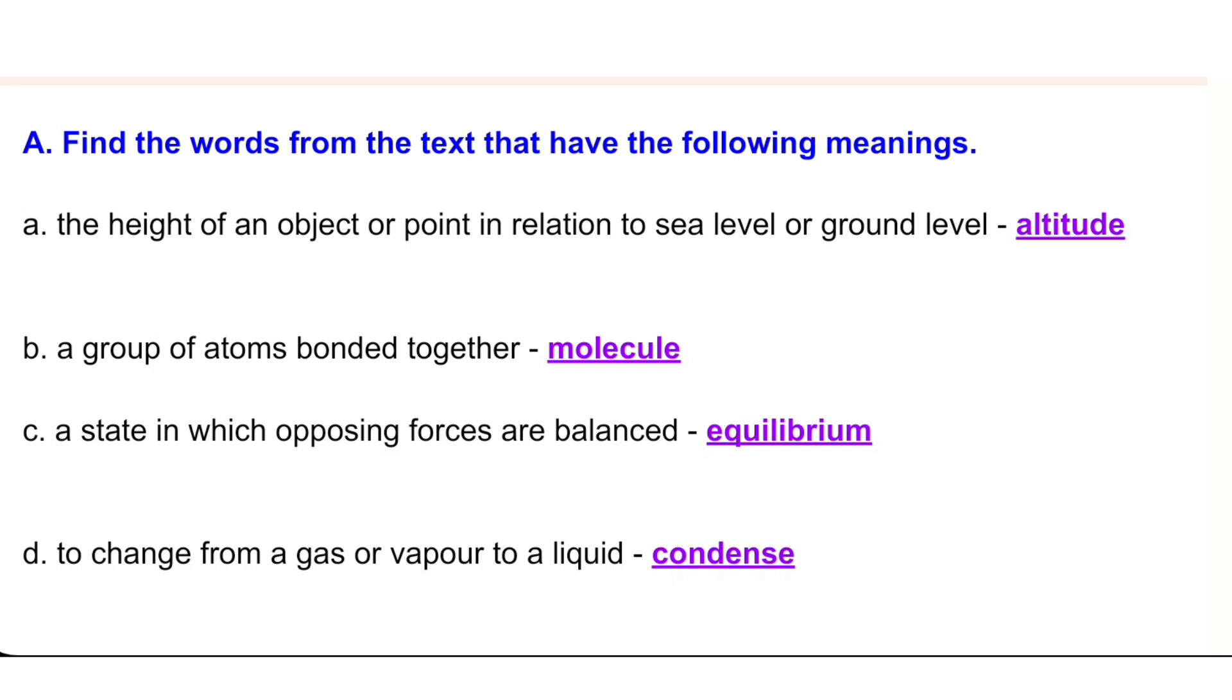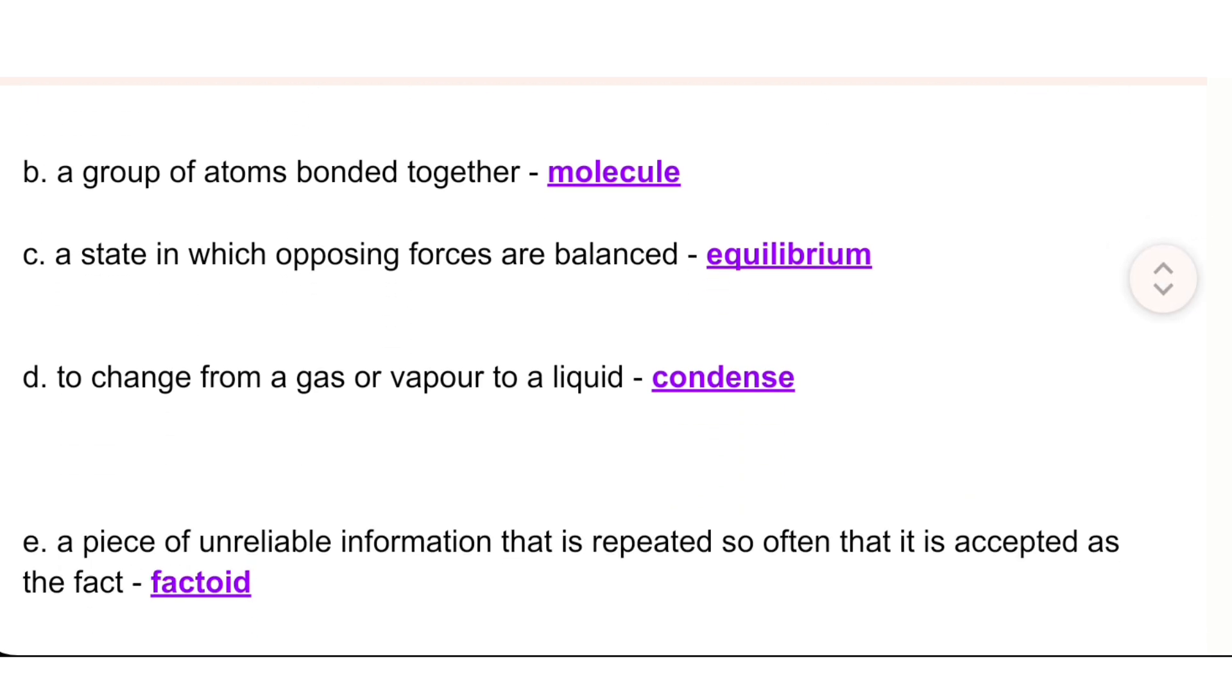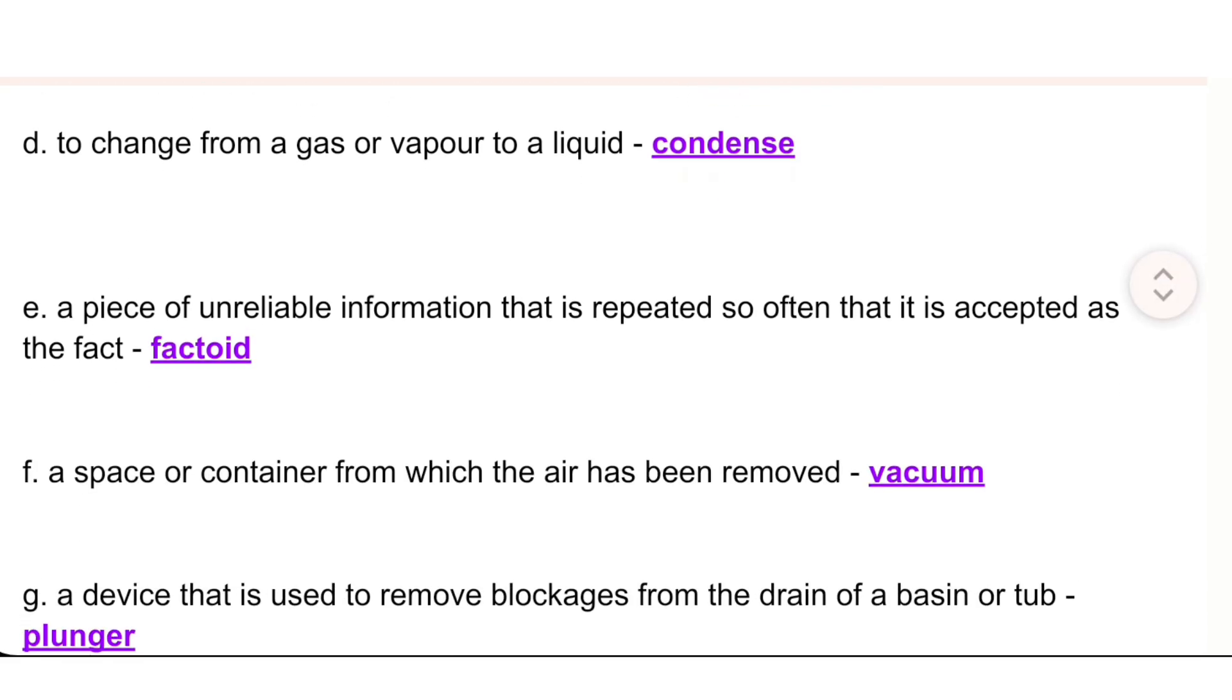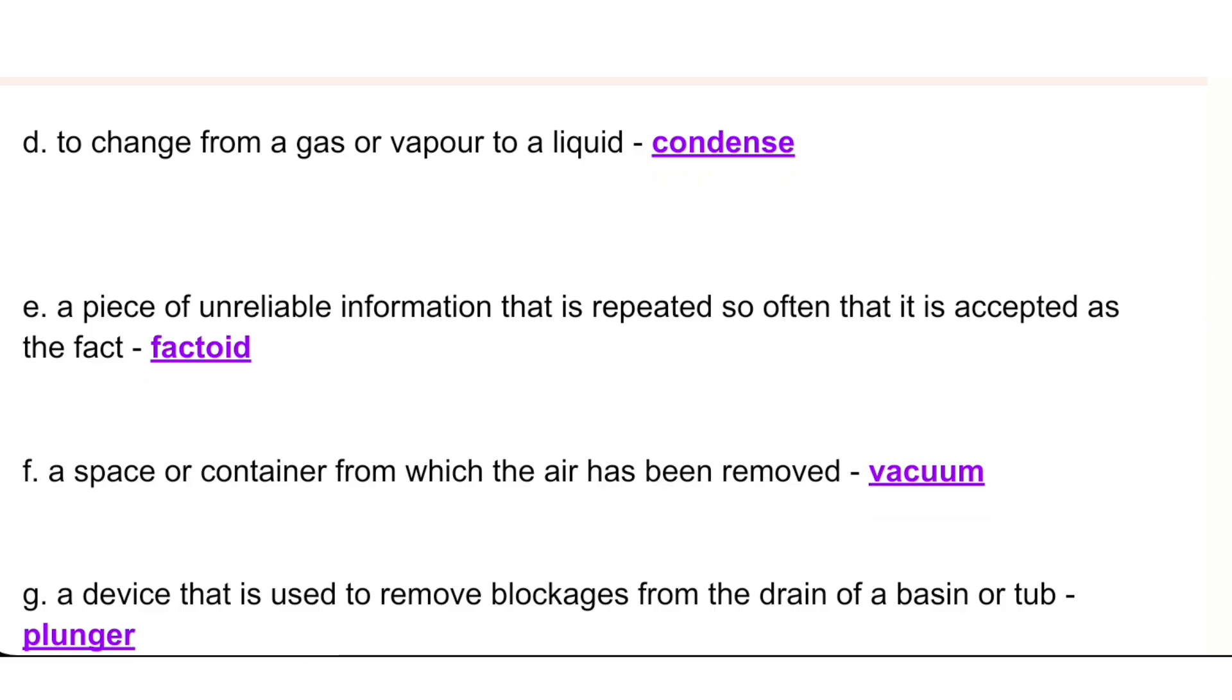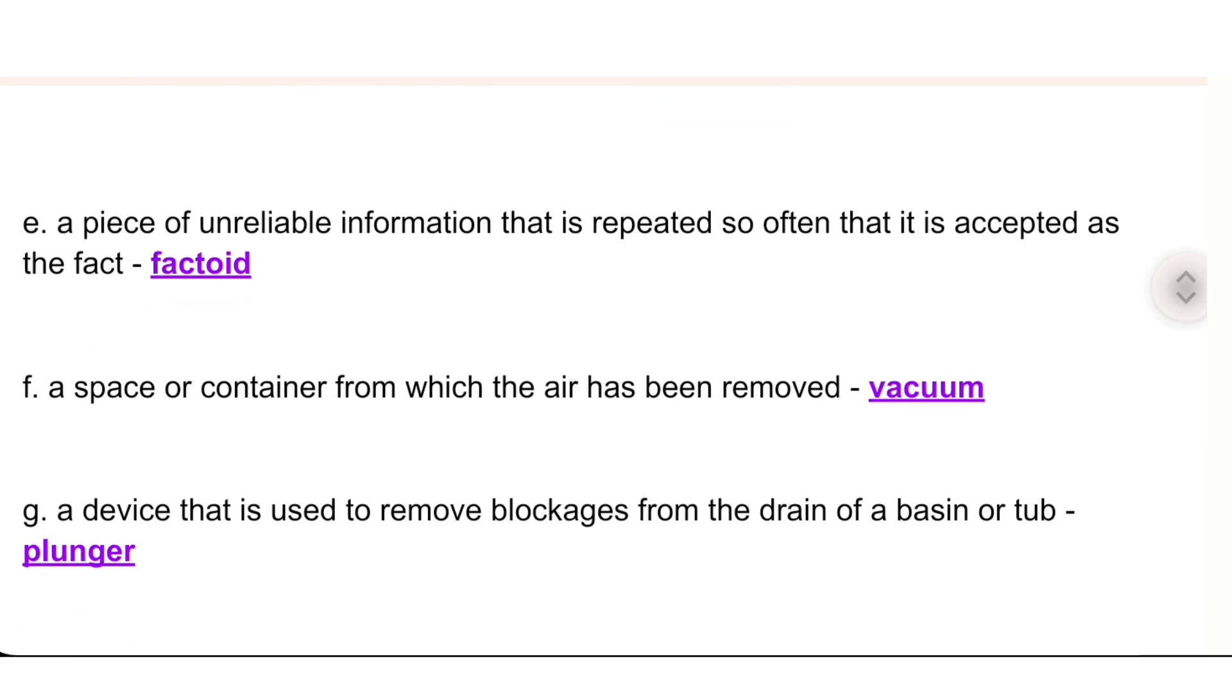c) a state in which opposing forces are balanced - equilibrium. d) to change from a gas or vapor to a liquid - condense. e) a piece of unreliable information that is repeated so often that it is accepted as fact - factoid. f) a space or container from which the air has been removed - vacuum.